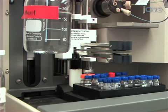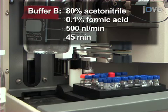After a wash step, switch the valve and deliver a 0 to 50% linear gradient of buffer B to the trap and the C18 separation column.